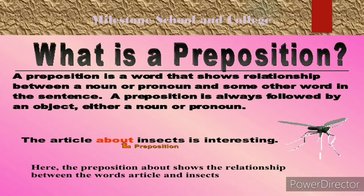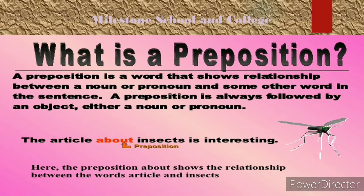A preposition is always followed by an object, either a noun or pronoun. For example: 'The article about insects is interesting.' Here, 'about' is a preposition and 'insect' is the object. The preposition 'about' shows the relationship between the words 'article' and 'insect.' So a preposition always builds a relationship between a noun or pronoun, and is always followed by an object.